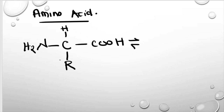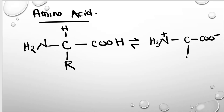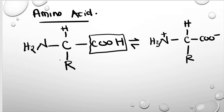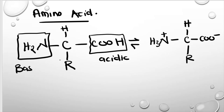This structure can undergo ionization. Acids are proton donors, so the carboxyl group will donate its hydrogen to the nitrogen, which is basic. When nitrogen is attached to four atoms it becomes positively charged, and the oxygen loses the hydrogen and becomes negatively charged. Because it contains both a basic amino group and an acidic carboxyl group, we say it is an amphoteric structure.